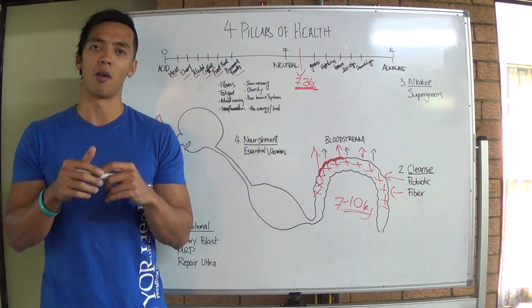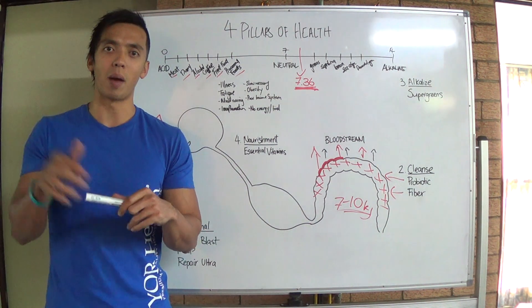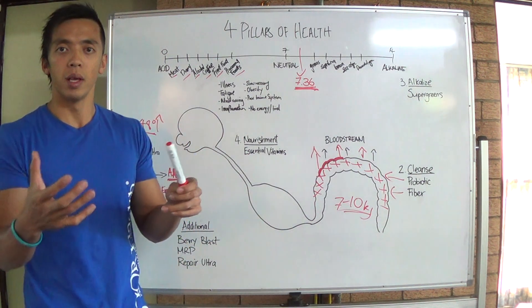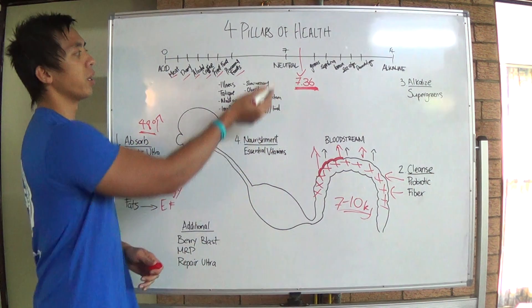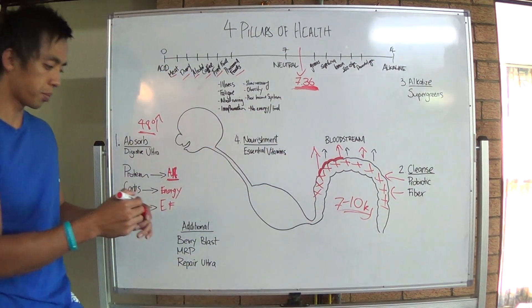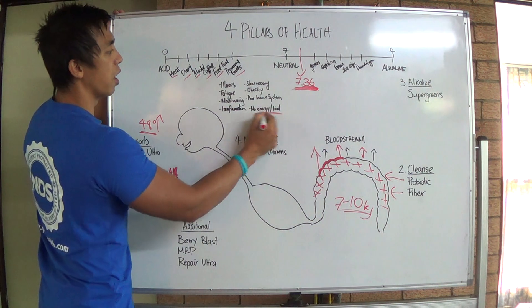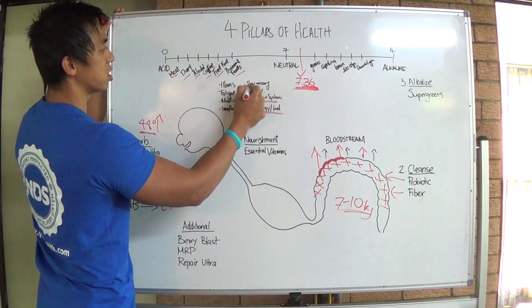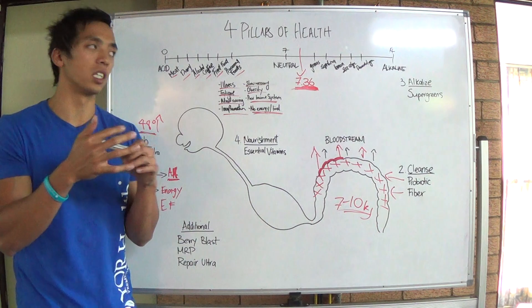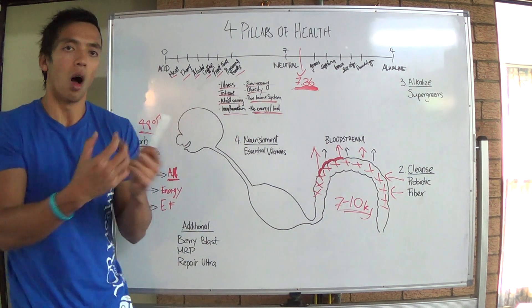If you're putting all this acidic food into your body, the body is working so hard to keep balanced at 7.36. The analogy is like driving on the highway doing 100 kilometers an hour in first gear — possible, but you're revving the engine to its maximum capacity, and eventually the engine will blow up. The same problem is happening in the body. The symptoms — illness, fatigue, inflammation, no energy, poor immune system, obesity — are all signs the body is not functioning at its optimum pH.